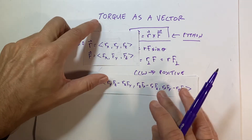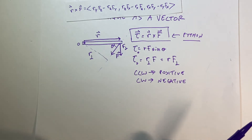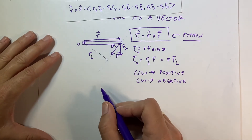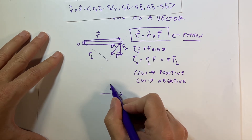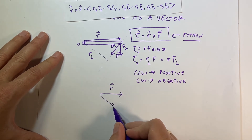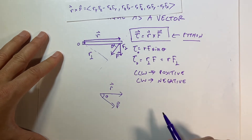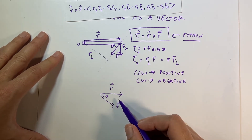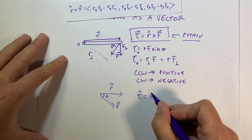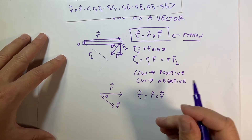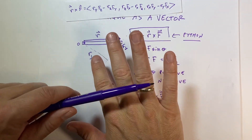We can find the direction of this vector using the right-hand rule. If I have two vectors r and f with angle theta between them, the direction of the torque — torque equals r cross f — can be found with the right-hand rule. This is my right hand.